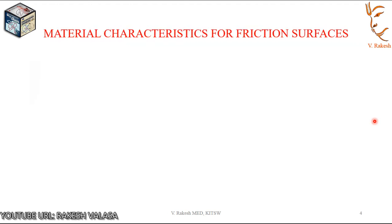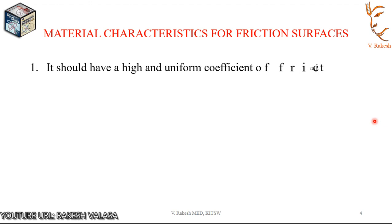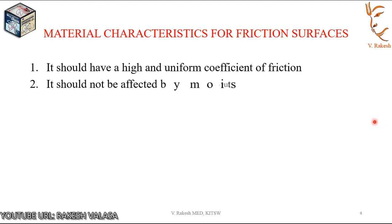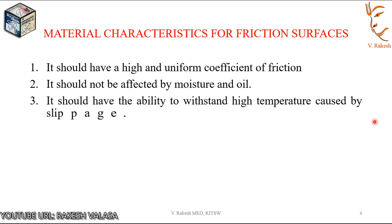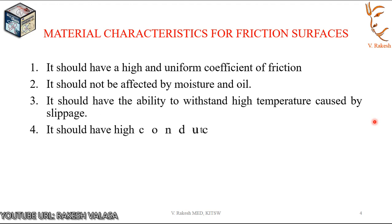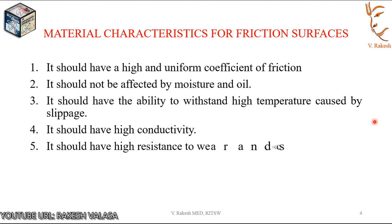Before explaining the types of clutch, let's look at the material characteristics for friction surfaces. It should have a high and uniform coefficient of friction. It should not be affected by moisture and oil. It should have the ability to withstand high temperatures caused by slippage, and it should have high conductivity, as well as high resistance to wear and scoring.